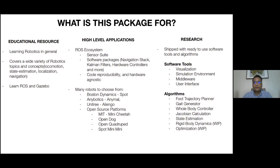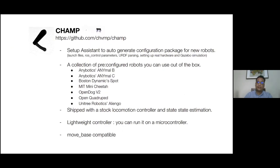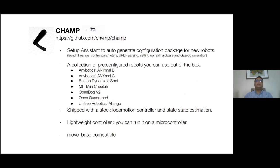In terms of algorithms, CHAMP ships with foot trajectory planners, gait generators, whole-body controller, and Jacobian functions for velocity calculations or dynamic control. There's work in progress for rigid body dynamics and optimization-based locomotion. The main repository has all details and an installation guide. Within the repository, there's a setup assistant to auto-generate your configuration package — a single point of entry for every robot instance so you don't have to dig into the codebase.